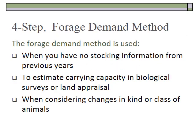This four-step method is kind of an academic method and is not used very often. You would use this forage demand method when you have no previous stocking information — for example, you bought a new ranch and don't have good data on the appropriate stocking rate. You might use it to estimate your current stocking relative to carrying capacity, for a land appraisal, or if you're considering a large change such as changing the kind or class of animals. Generally, stocking rates are set based on experience and adjustment over time, but occasionally you need to go back to the calculator and check if you're on track.